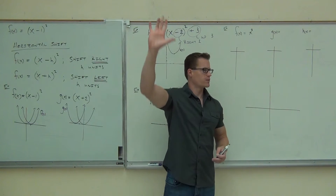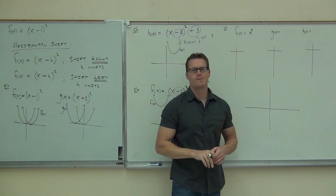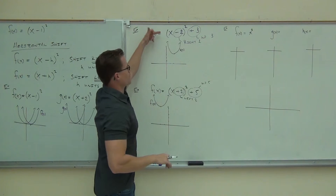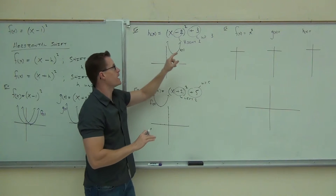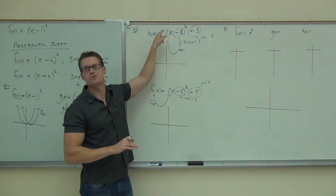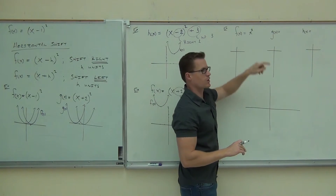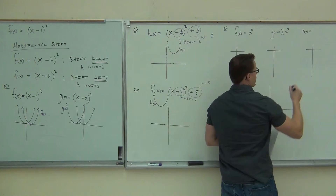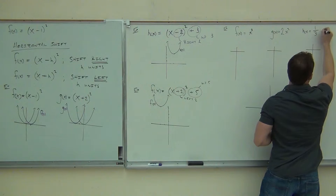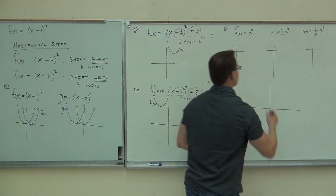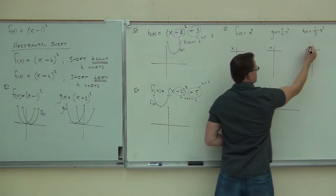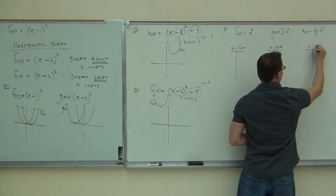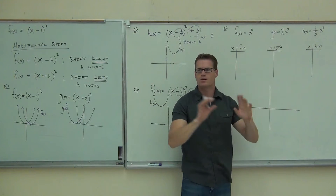On a show of hands, how many of you feel okay with what we just talked about so far today? The only other thing I need to tell you that you haven't covered yet is what happens if there's a number in front of that x squared besides 1. Right now all you've seen is positive or negative, but there's been no number there. We're going to look at what a number does. So first, we're going to compare x squared and see what that does graphically. We'll compare 2x squared, and let's do 1 third x squared, and see what those things do.